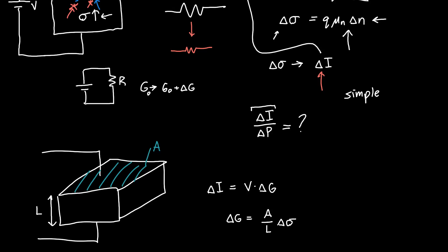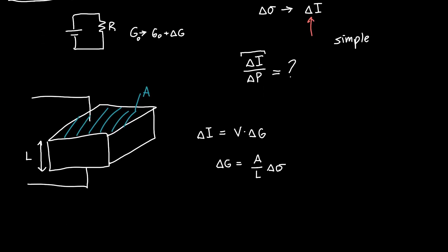We just wrote that up here. It's just related to the electronic charge, the mobility, and the change in carrier density. So delta sigma is just Q mu_n times delta n, and so we're slowly getting to where we want to be.